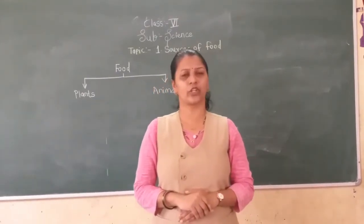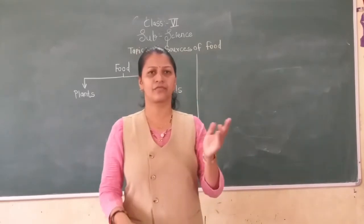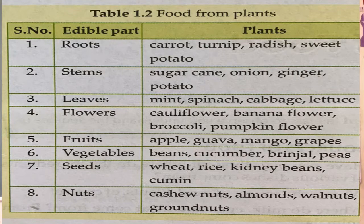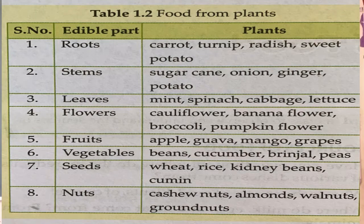Now, in your textbook this chart is given for you. If you look carefully — the root, which is the underground part of the plant, is called the root. From the root we can get carrot, turnip, radish, and sweet potatoes, which can be eaten.